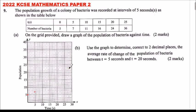When t is 10, the bacteria count is 11, plotted there. At t is 15, we have 16, plotted there. When t is 20, we have 24 — counting 1, 2, 3, 4 — that's 24. At t is 25, we have 36 — 1, 2, 3 — that is 36.